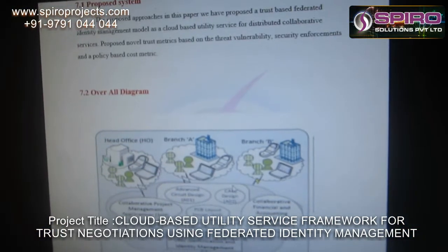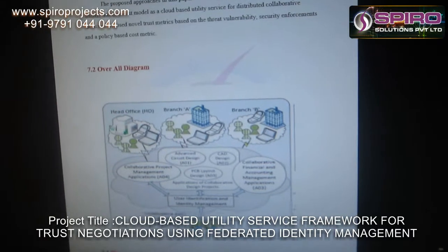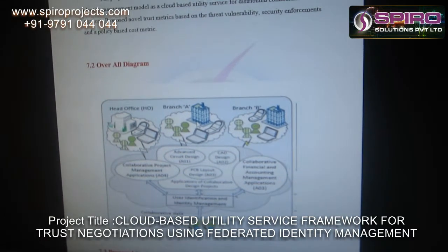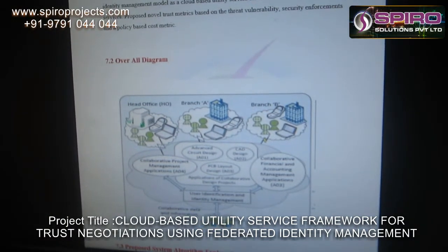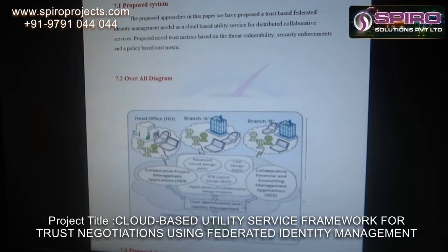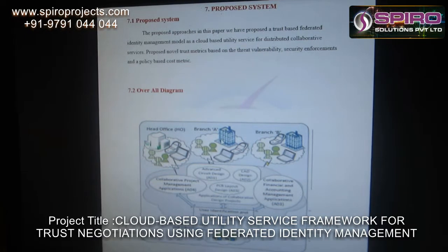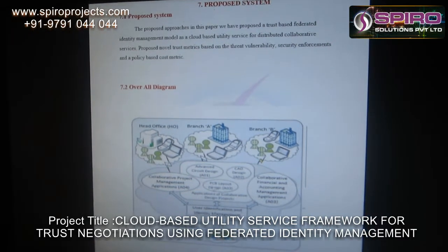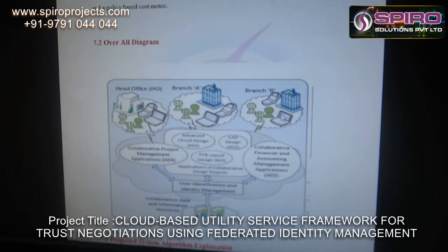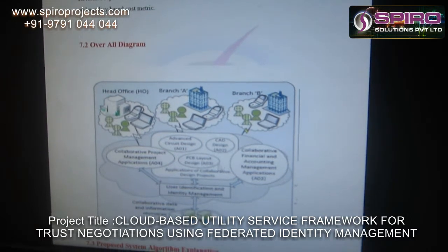Let's see the proposal diagram. One head office is there, and the head office maintains two related branches — Branch A and Branch B. Both Branch A and Branch B store their data into one particular cloud. Branch A sends some data to that cloud, and Branch B also sends some data to that same cloud, so all the data is stored in one particular cloud.